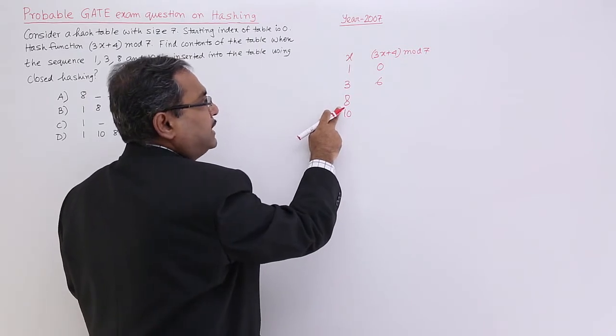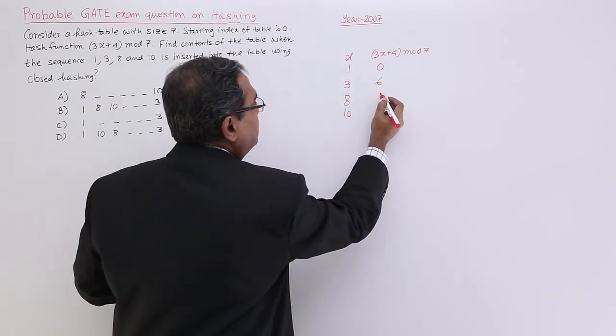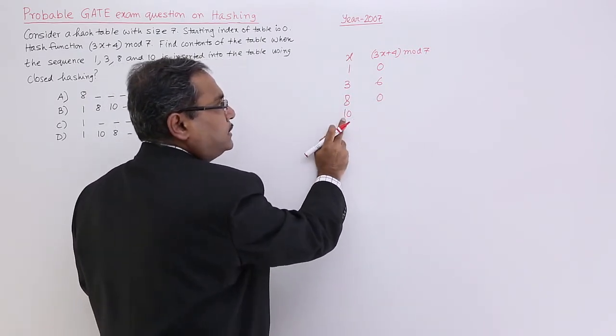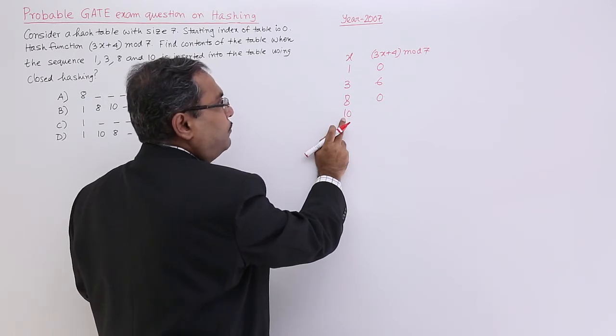3 into 8, 24 plus 4 is 28 mod 7, which is 0. 10 into 3, 30 plus 4 is 34 mod 7, which is 6.